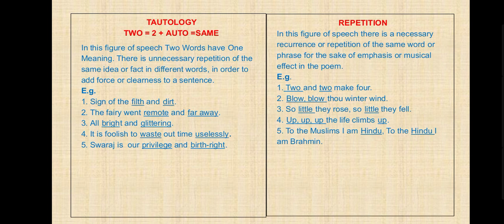Tautology — in this figure of speech, two words have one meaning; it is an unnecessary repetition of the same idea or fact in different words in order to add force or clarity to a sentence. Synonyms are used in one line. Examples: 'Signs of filth and dirt' — both are synonyms. 'The fairy went remote and far away.' 'All bright and glittering.' 'It is foolish to waste our time uselessly.' 'Swaraj is our privilege and birthright.'